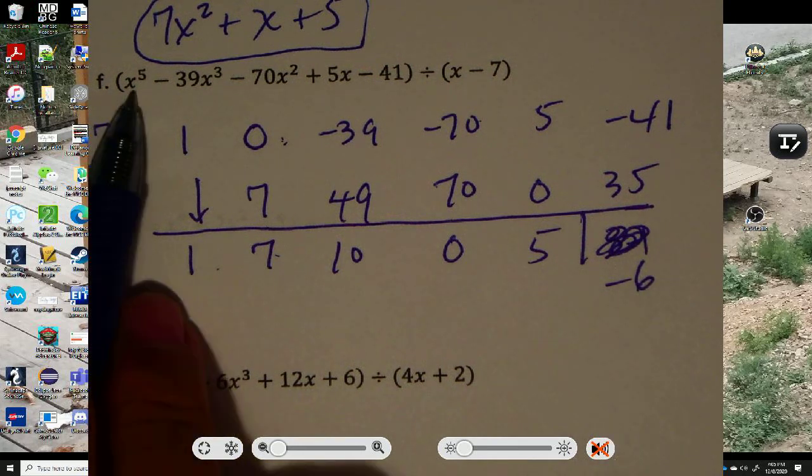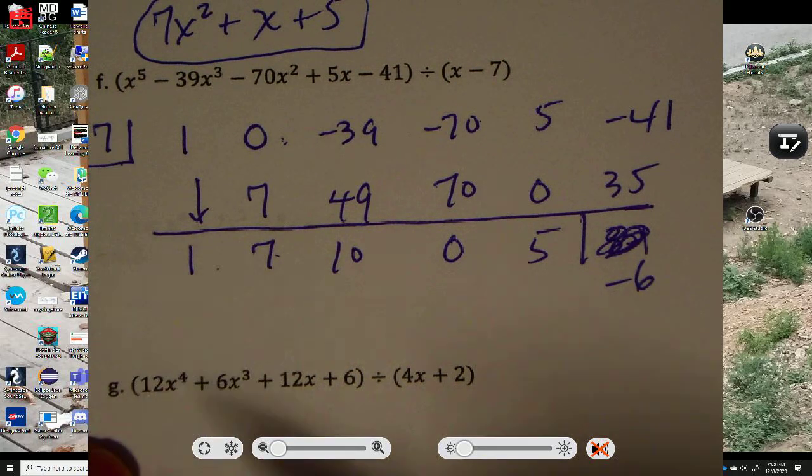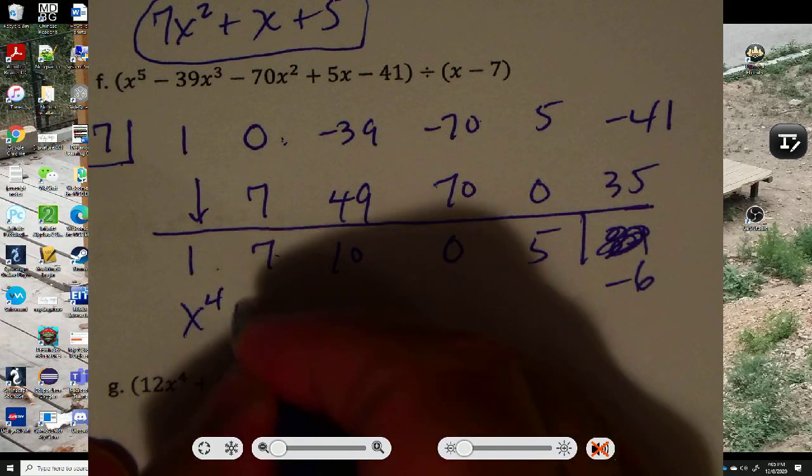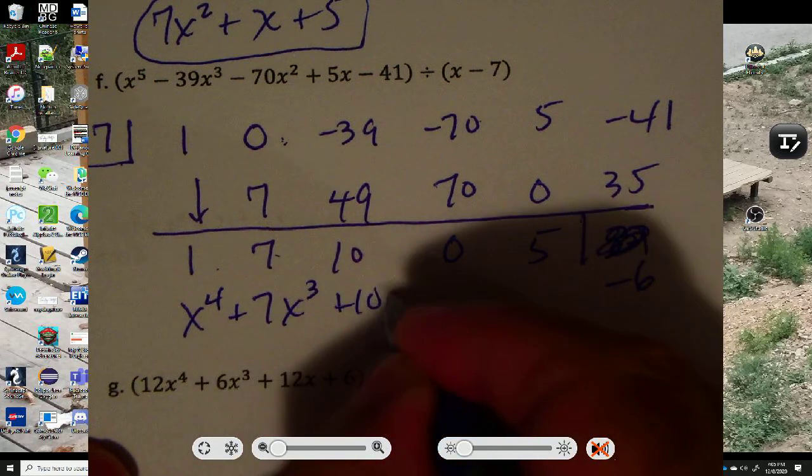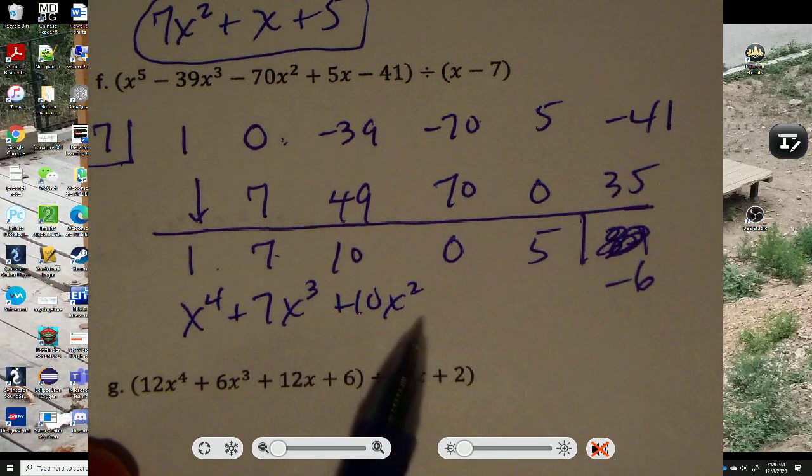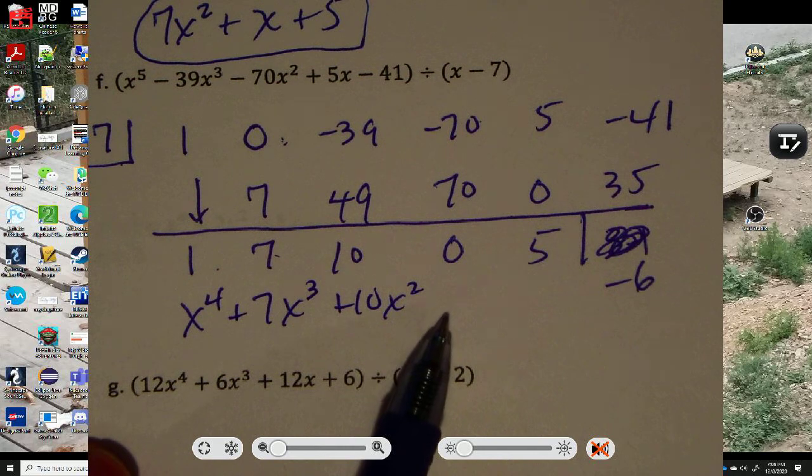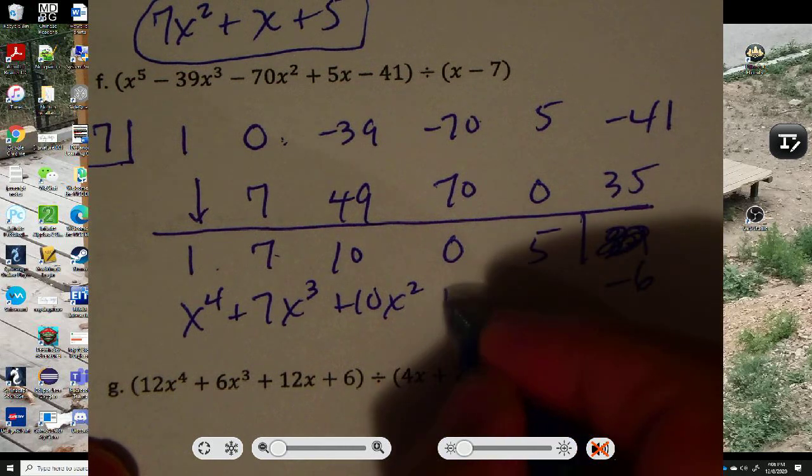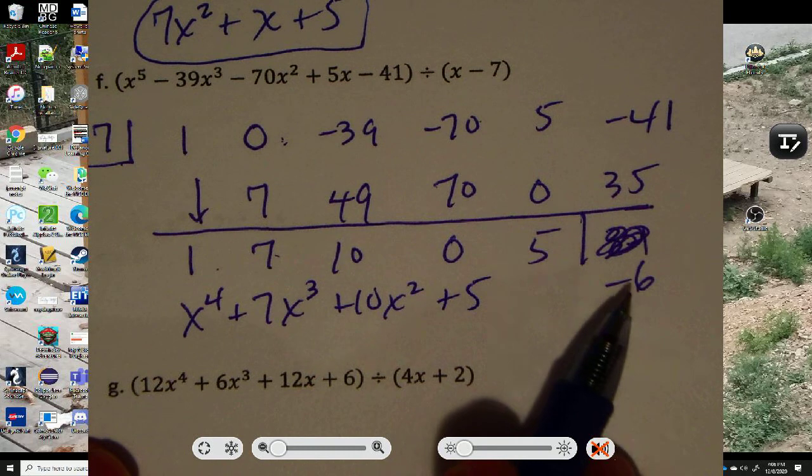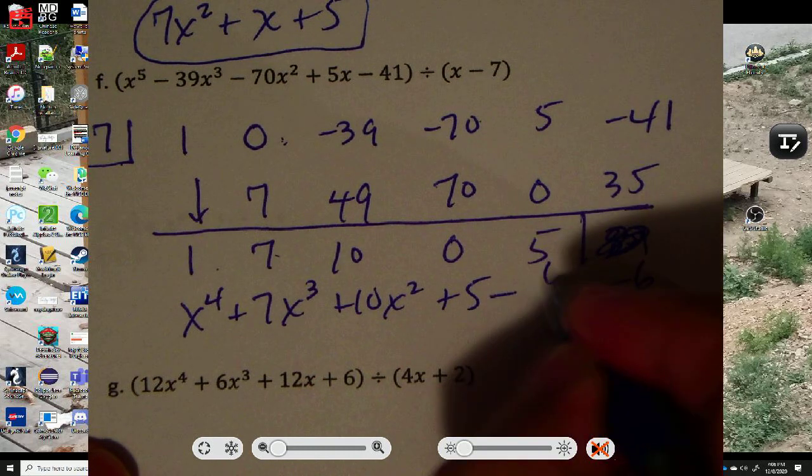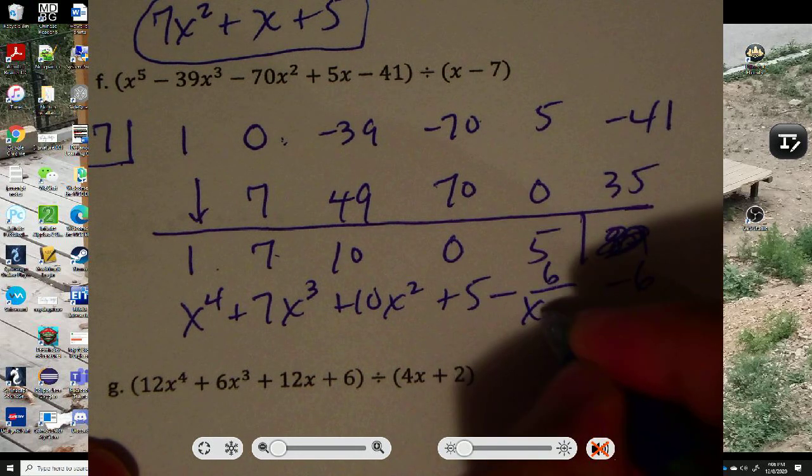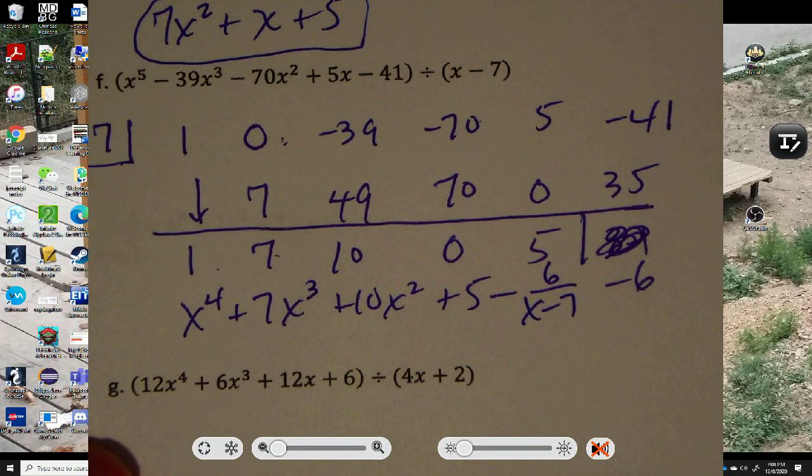Alright. So the beginning problem was x to the fifth. So that means this is now x to the fourth. So it's x to the fourth plus 7x cubed plus 10x squared plus 0x. I'm not going to bother to write the 0x. I'm just going to put plus 5. And that's the remainder. Remember how to write the remainders. It's minus 6 over the divisor, x minus 7. So this is the answer.